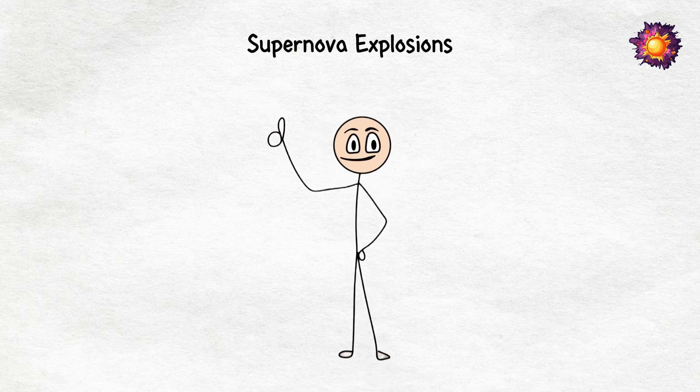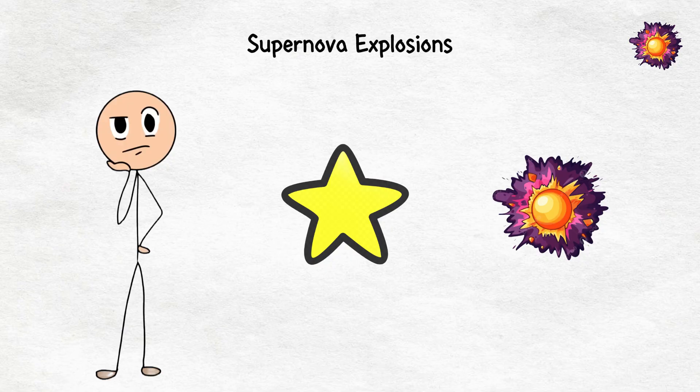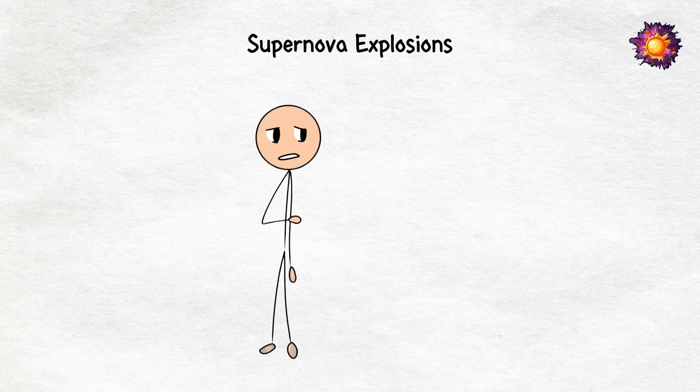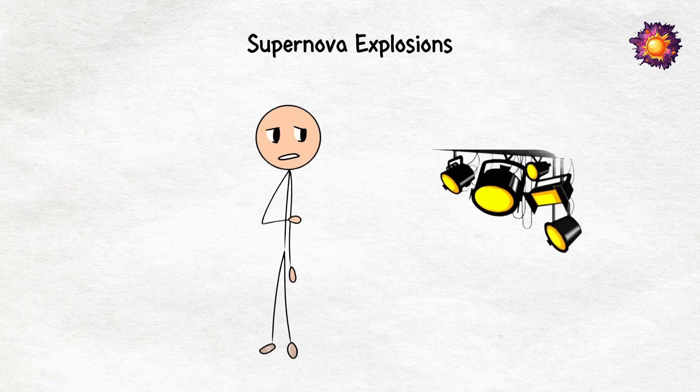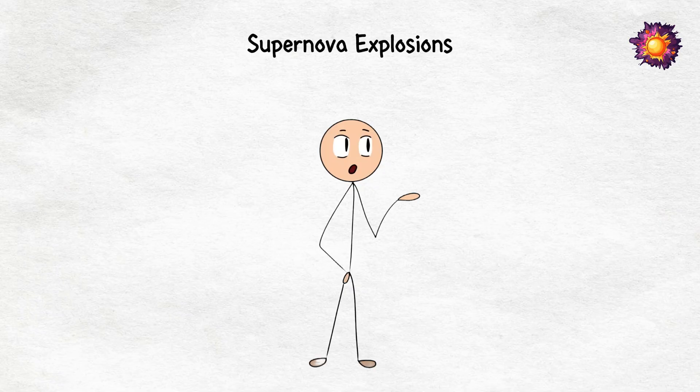But before you panic and start prepping for the end of days, there is some good news. The nearest star that could potentially go supernova is Betelgeuse. And while it has been acting up lately, it is still far enough away that if it did explode, we would get a spectacular light show, not total extinction. So, you can rest easy for now, unless Betelgeuse has other plans.